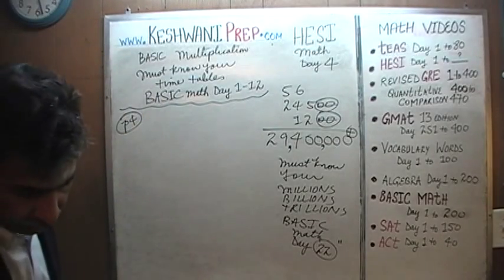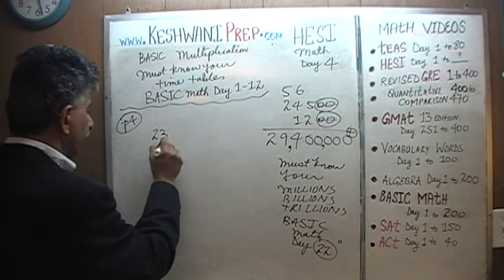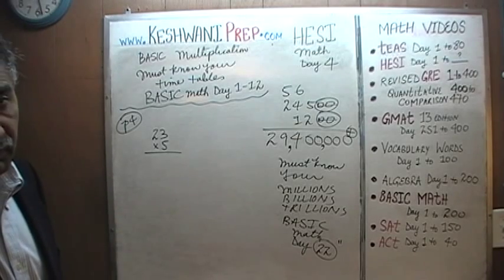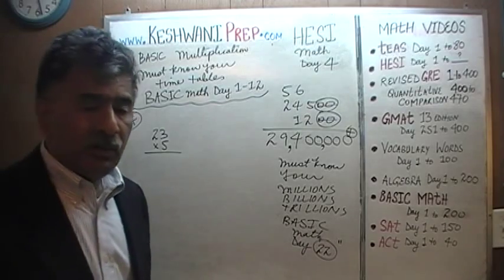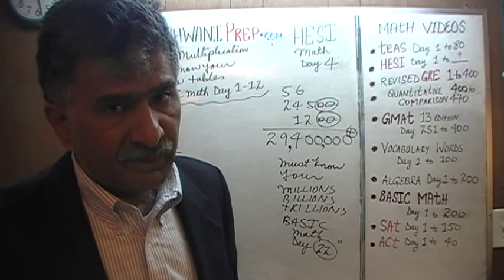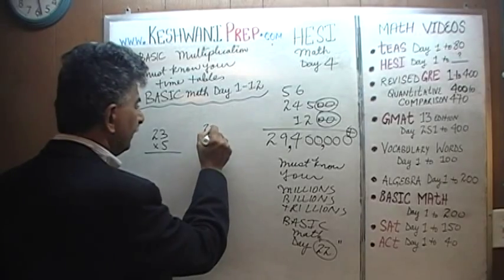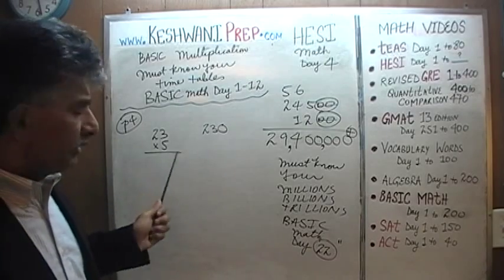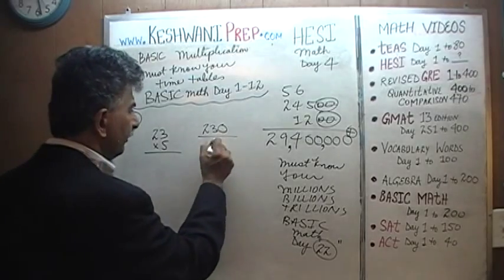Page number four is where we are. The first problem is twenty-three times five. Twenty-three times five — you can work it out, it's a very simple problem. But I want you to learn to think logically and look at problems intuitively. We know that twenty-three times ten would simply be two hundred and thirty. Two hundred and thirty represents twenty-three times ten, but it's twenty-three times five, so it's just going to be half the amount.